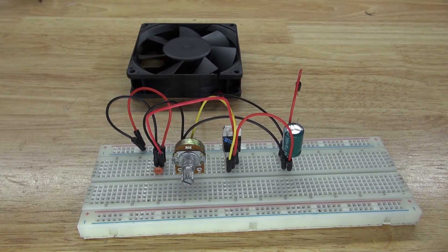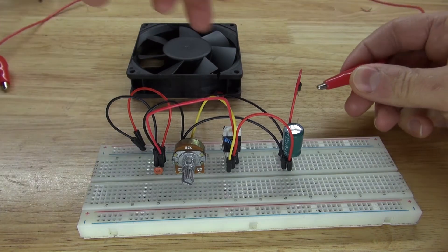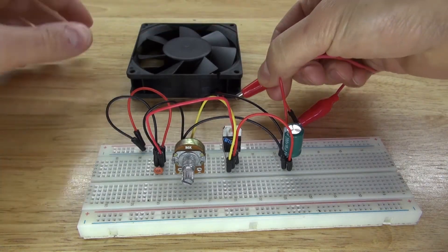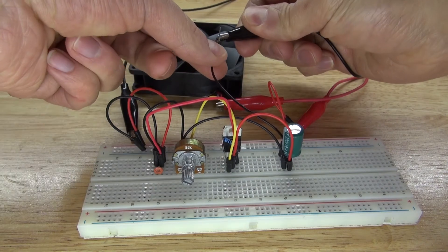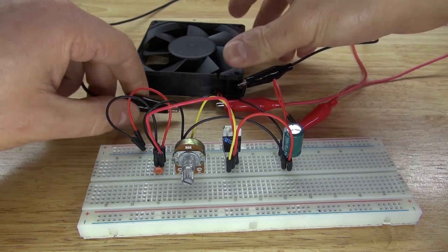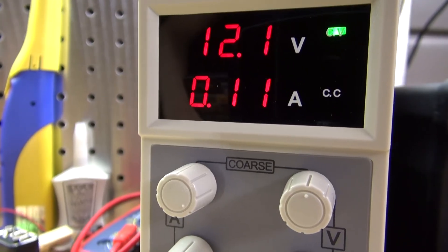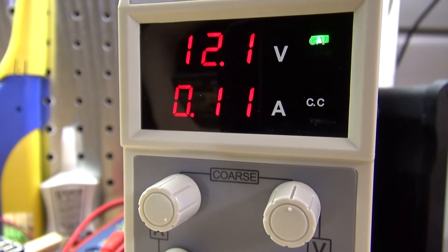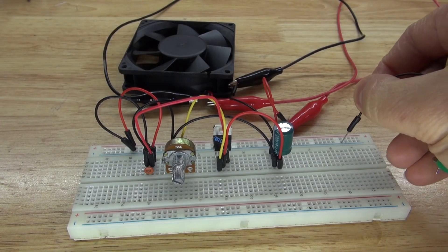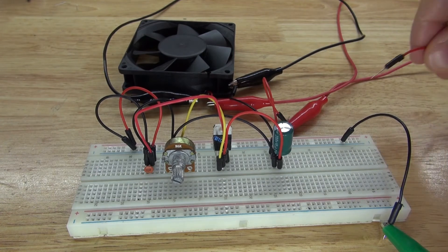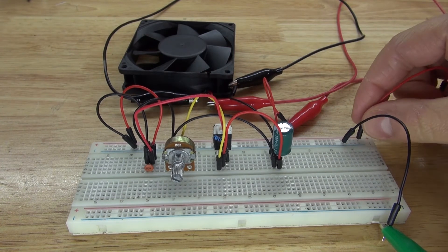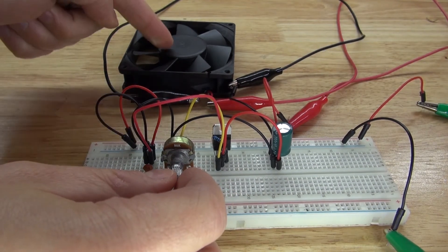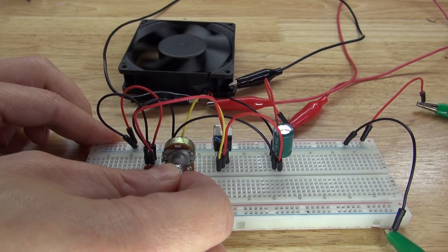And now it's time to test the circuit, and let's control the speed of this PC fan. Take my alligator clip, connect the positive to the positive of the fan. Take the negative and connect the negative to the fan. I have my lab bench power supply set at 12 volts DC, and I'm going to connect that to my input. Take the negative wire from the lab bench power supply, connect to the negative rail, positive wire from the lab bench power supply, connect to the positive rail, and now I can turn the potentiometer and control the speed of this fan.